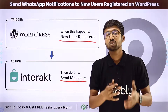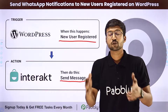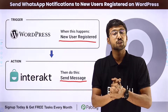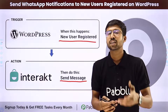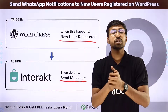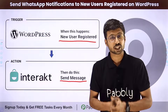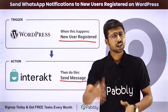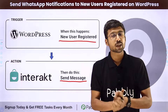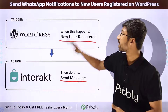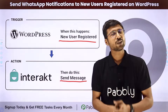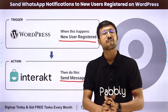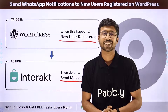The WhatsApp message will be sent using Interakt, which is an official API service of WhatsApp, using which you can send messages on WhatsApp to your customers and users. Now let's see how you can set up this automation and connect WordPress with Interakt.